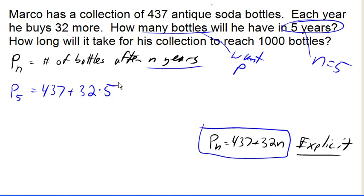So 32 times 5 gives me 160. I go ahead and add that to 437. I get 597 bottles in five years, and that answers our first question.